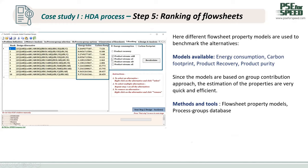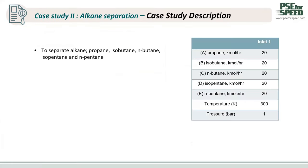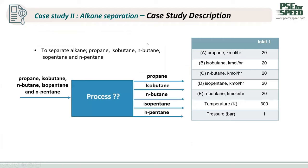Since the model is based on the group contribution approach, the estimation of properties is very quick and efficient. Now let me give you another example: the alkane separation. The task is to separate an alkane compound mixture consisting of five compounds — propane, isobutane, normal butane, isopentane, and normal pentane — with the chemical data shown in a table.